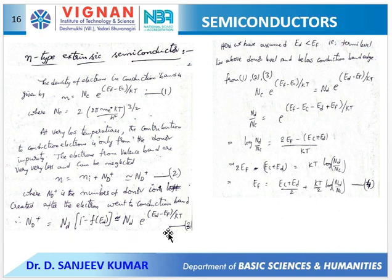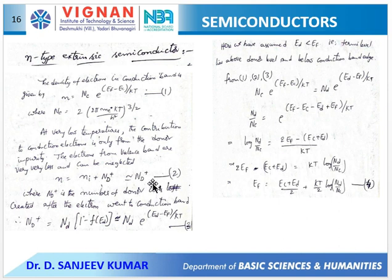As T tends to 0, the expression simplifies, and the total number of electrons is only the electrons from the donor atoms, because at very low temperatures the intrinsic electrons from bond breakage are very few compared to electrons from donor atoms. So N becomes N_d⁺ at very low temperatures. We equate the two expressions — one for N and one for N_d⁺ — to get an expression for the Fermi level.